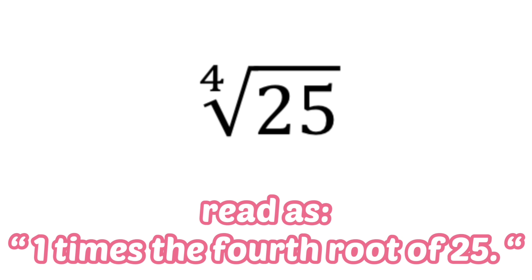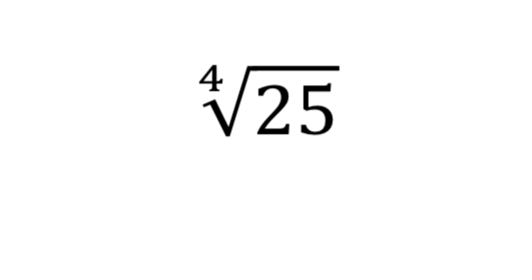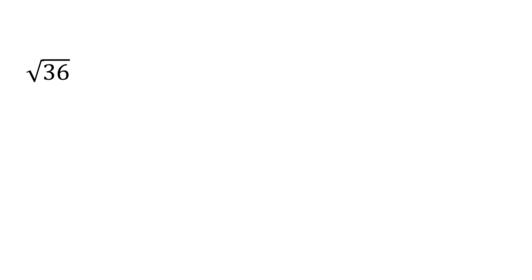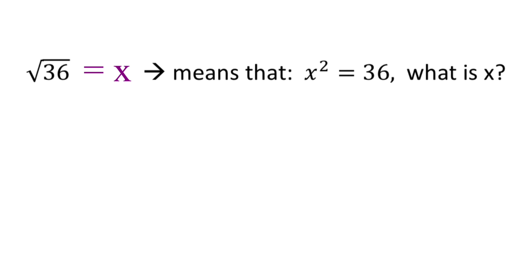So that is how we read radical expressions. Now, how do we determine the value of a radical expression, or how can we rewrite it in a different form? Let's take this first example — the square root of 36. To evaluate this, we equal this whole expression to x, so: square root of 36 equals x. We are going to rewrite this into its equivalent exponential form, which means x squared is equal to 36.